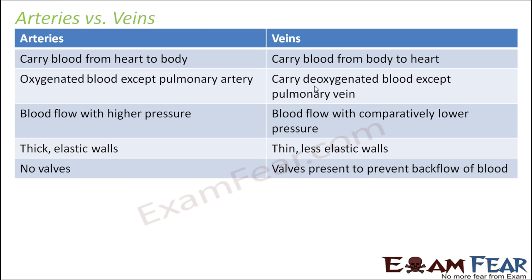Now let us compare arteries and veins. Arteries carry blood from the heart to different body parts; veins carry blood from different body parts back to the heart. Arteries carry oxygenated blood — the only exception being the pulmonary artery — while veins carry deoxygenated blood, with the only exception being the pulmonary vein.